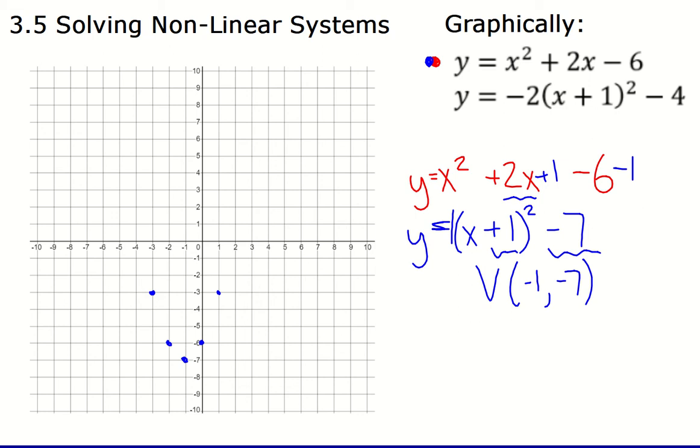3 squared is 9, so I can go over 3 and up 9 from the vertex. 4 squared is 16, which actually does fit on this graph. I'm not sure where the graphs are going to intersect, so I'm going to try to have a fairly decent graph throughout. And so I can go ahead and graph this quadratic. Voila.